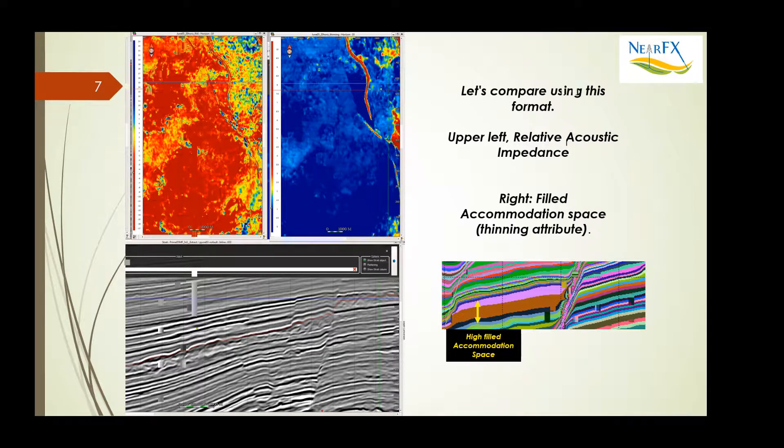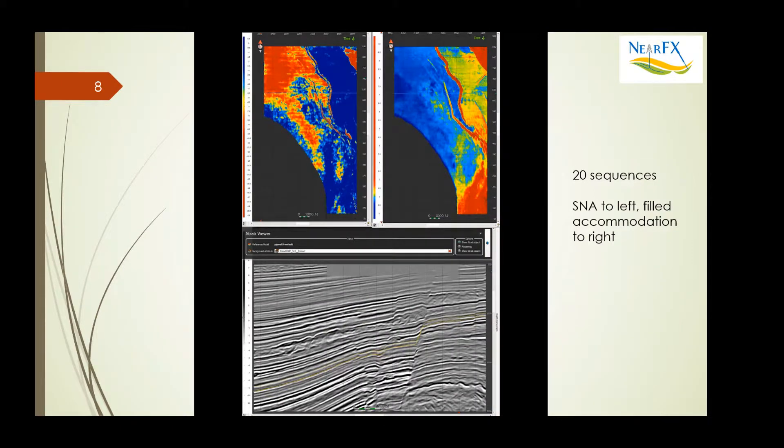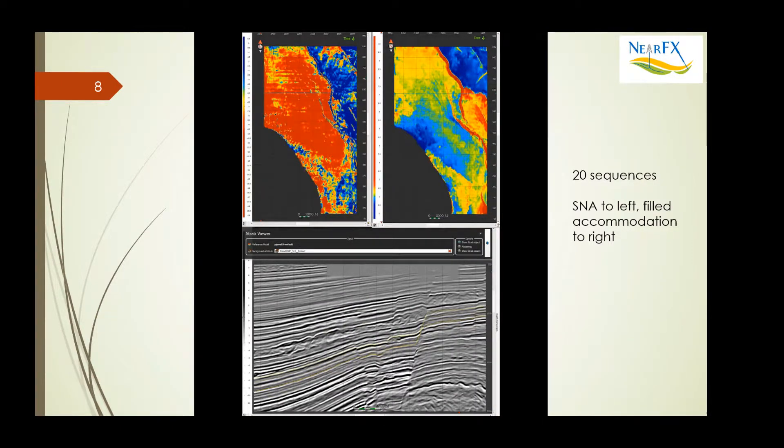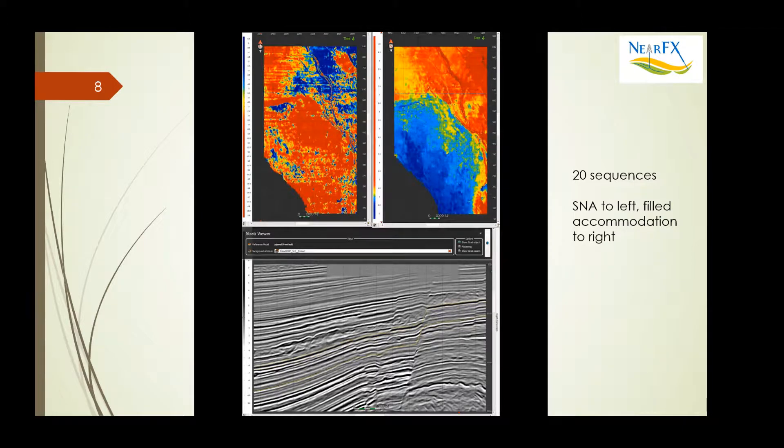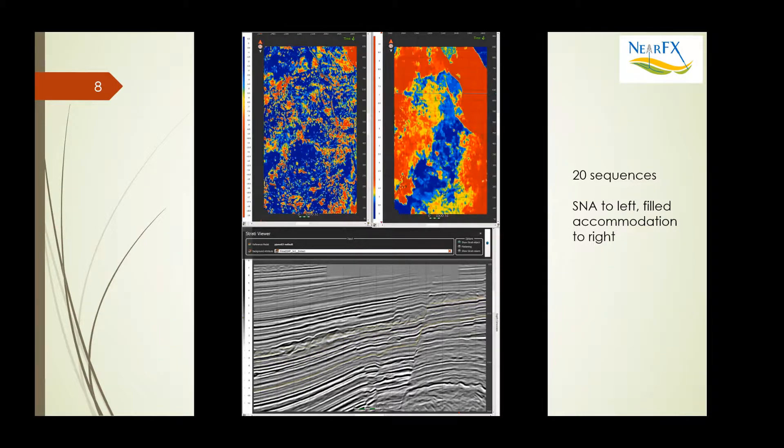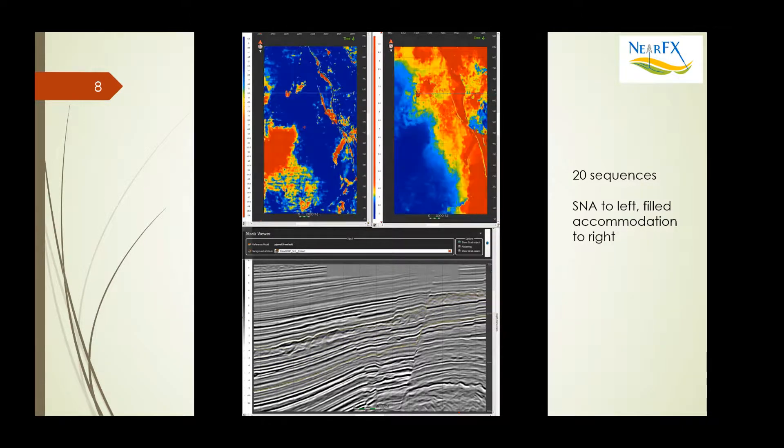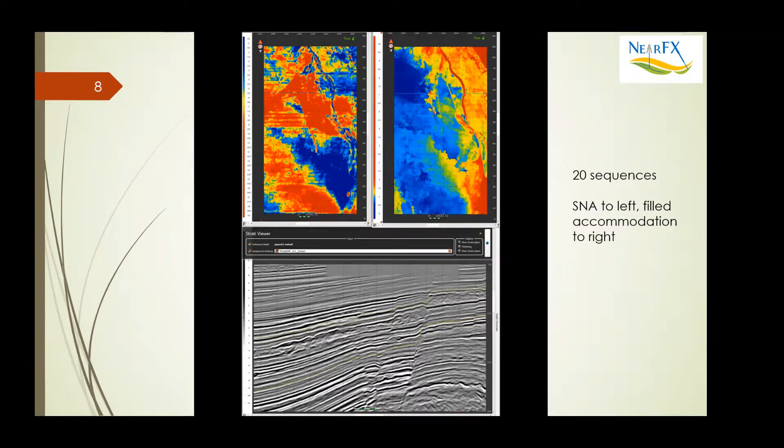So when you take these attributes and slice 20 times through a zone of interest, here over a course of nine seconds, we see the type of analysis you get. Is this sufficient?